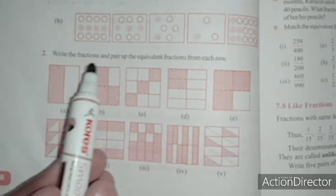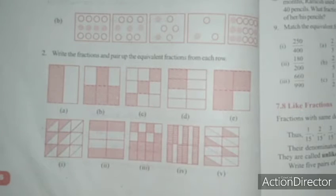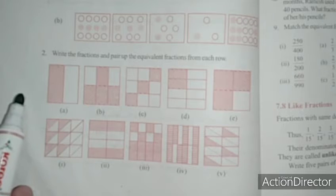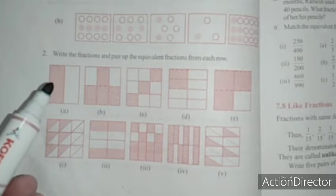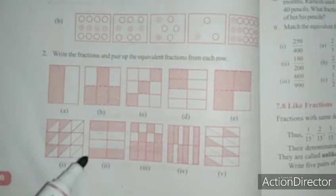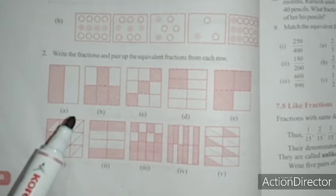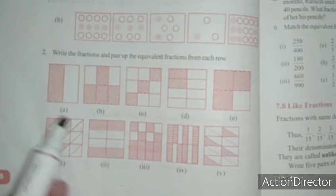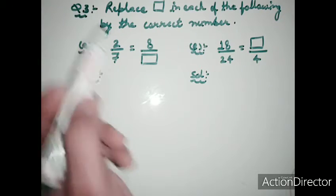Question 2: write the fractions and pair up the equivalent fractions from each row. First write the fraction form of all the shaded parts, then match the figures with other figures having equivalent values. You will solve this question in the book by matching the figures which have the same equivalent value.